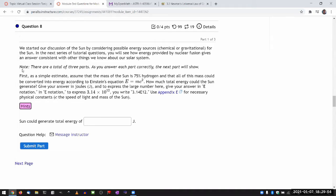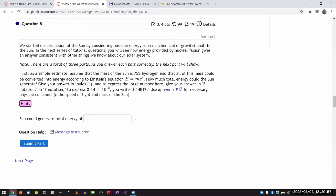So I think this is more of what we call back-of-the-envelope calculation question. That's why it's not referring to any textbook sections because I think all the formulas you need is here. So let me work through that. It says in the next series of tutorial questions you will see how energy provided by nuclear fusion gives an answer consistent with the other things we know about our solar system. So each step in this calculation will be a refinement. So this first simple estimate, it'll be an overestimate.